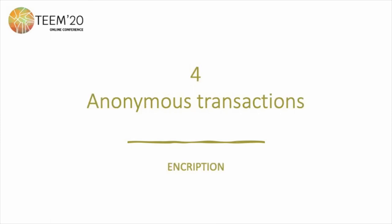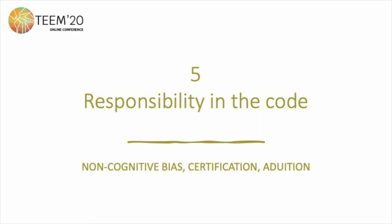Principle number four is about anonymous transaction — this point is about encryption. Because if you are anonymous, you can decide when your information is private or when your information is public, and this gives control to the students and each educational role in an educational community. Point number five is about responsibility in the code. We advocate for open source because if a tool is open sourced, we can evaluate, we can audit, and we can certify that this tool is doing what it says.